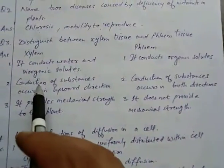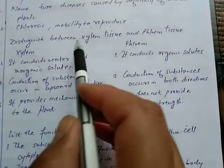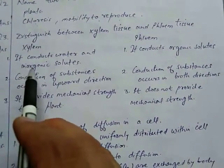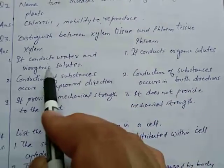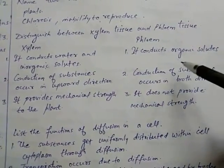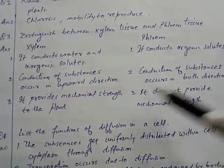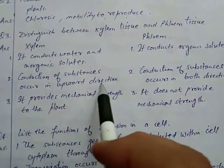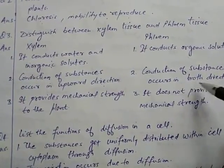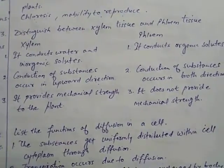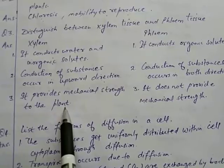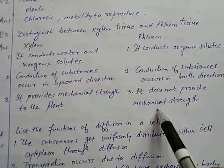Third question is an important one: Distinguish between xylem tissue and phloem tissue. Xylem conducts water and inorganic solutes, meaning it helps in transport of water and minerals. Phloem helps in conduction of organic solutes, transporting prepared food. Conduction in xylem occurs in upward direction, while in phloem it occurs in both directions. Xylem provides mechanical strength to the plant, whereas phloem does not.